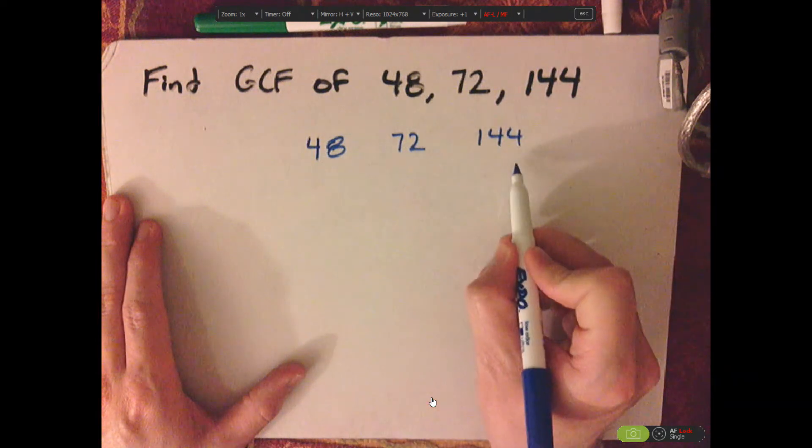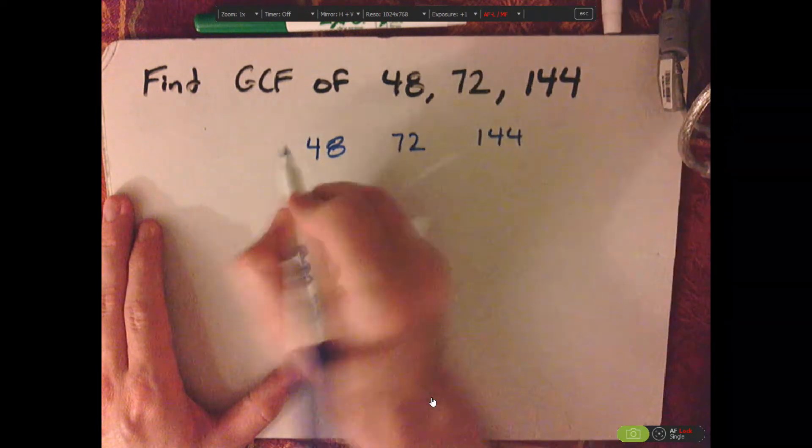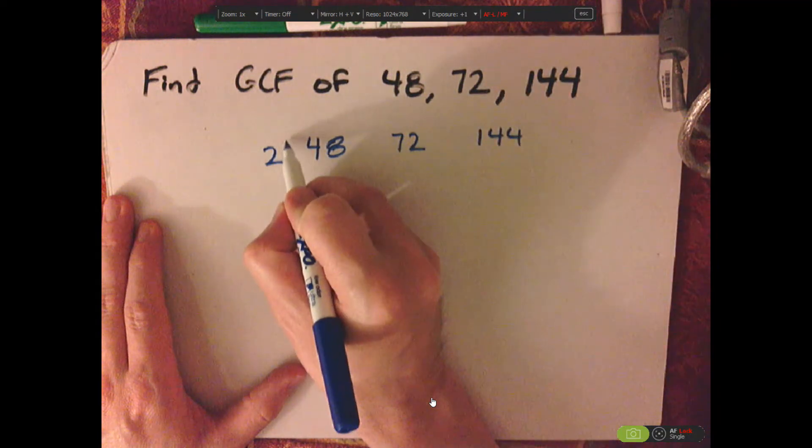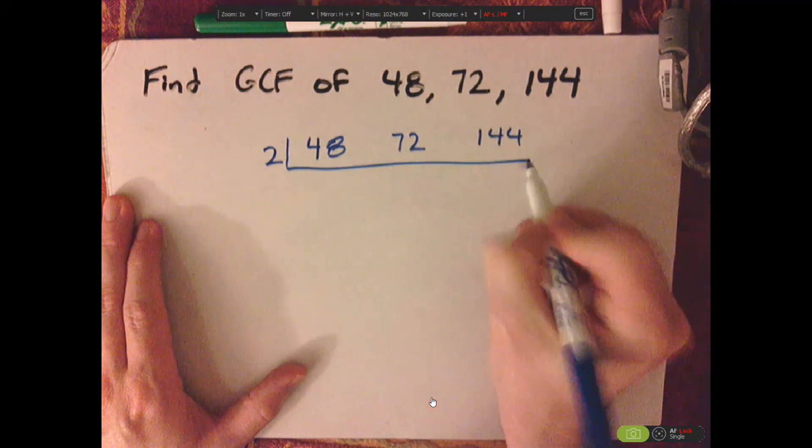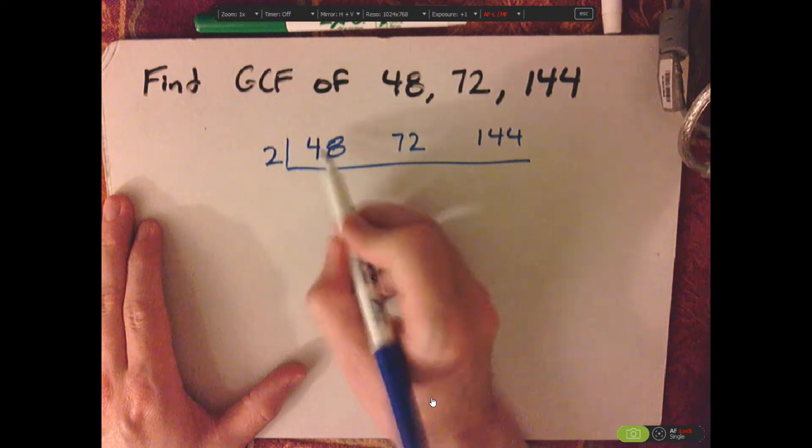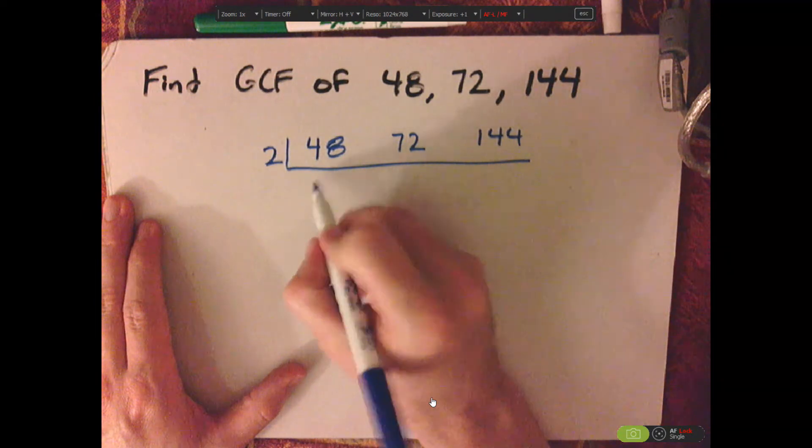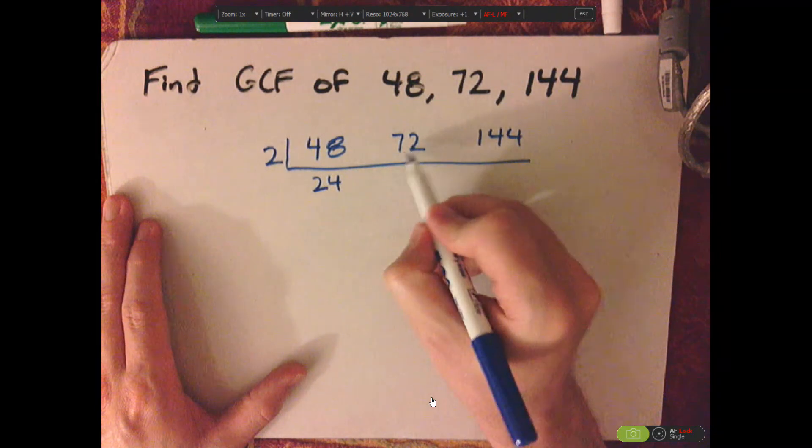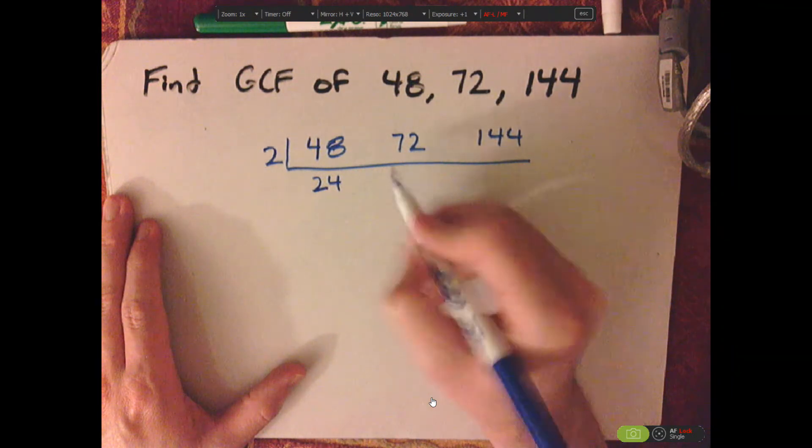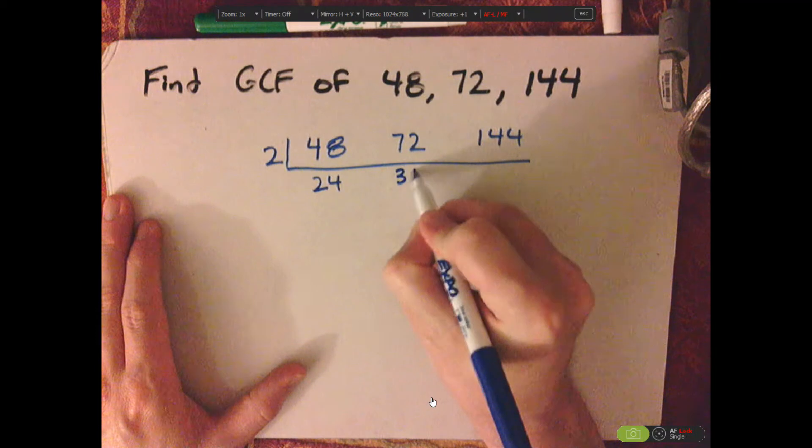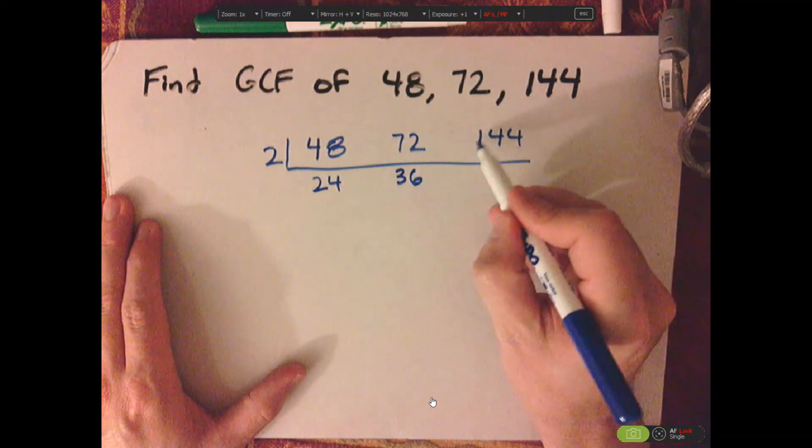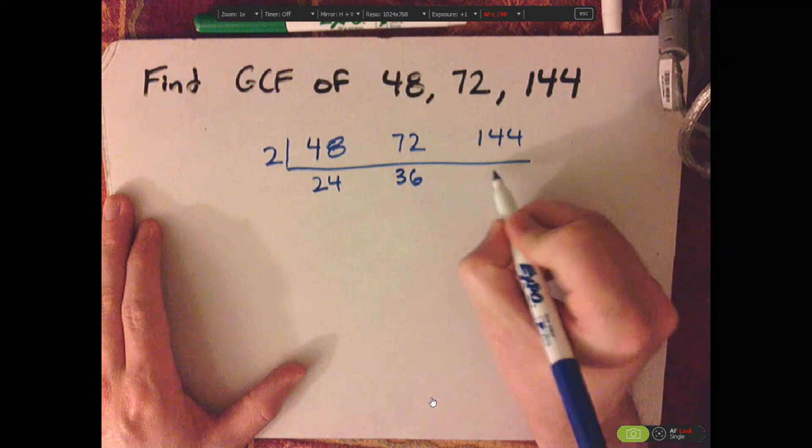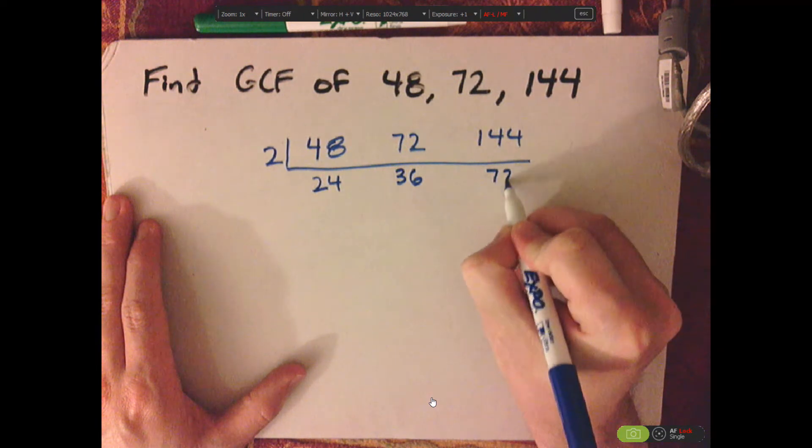I know all these are divisible by two, so let's start with that. And we'll do upside down short division. So two goes into 48 twenty-four times, two goes into 72 thirty-six times, and then two goes into 144 seventy-two times.